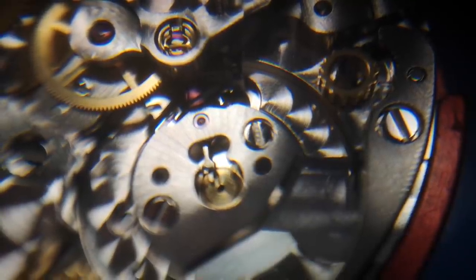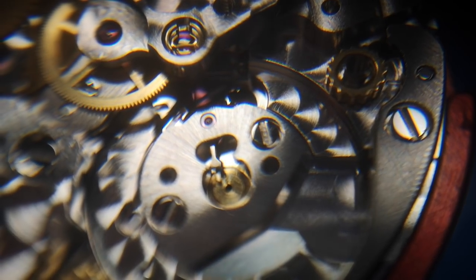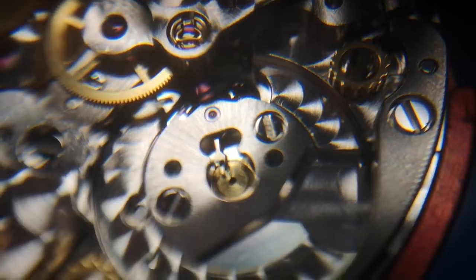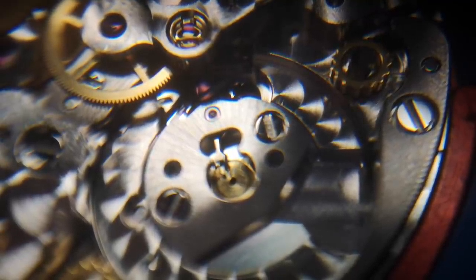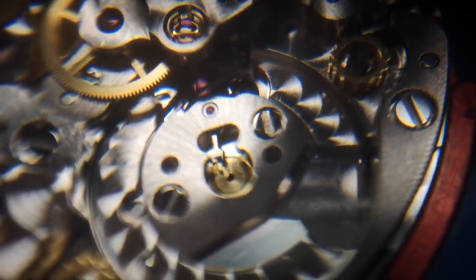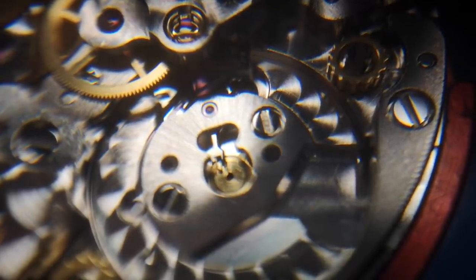Now that is the pallet fork back in then. And to check its operation, if you put a little bit of power on the mainspring you'll see it lock into place, and then if you gently move it to one side with a clean oiler you'll see it suddenly flick across, which is it acting as though the impulse jewel is taking it out of a lock.